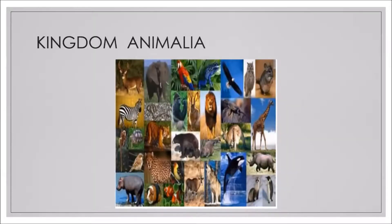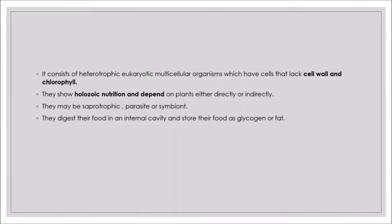Kingdom Animalia consists of heterotrophic, eukaryotic, multicellular organisms. The cell wall is absent and chlorophyll is also absent. Members of Animalia show holozoic nutrition, depending on plants directly or indirectly. They may also be saprophytic, parasitic, or symbiont. Food is digested in an internal cavity and stored as glycogen or fat.